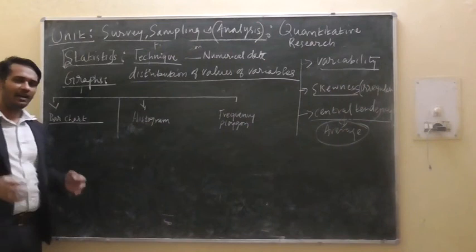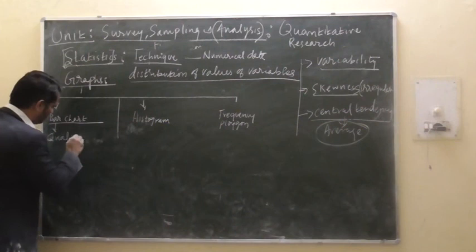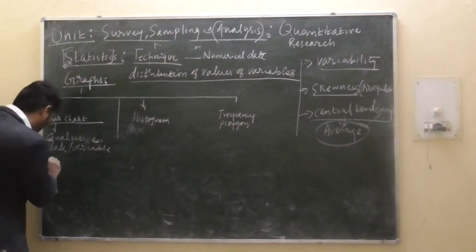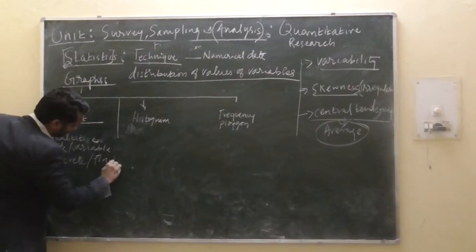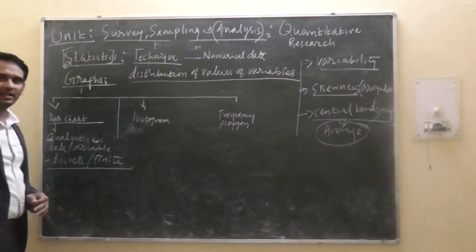The bar chart is specifically used for quantitative data or variables which are not continuous — they are discrete, finite, and unique. For example, how many people are married and unmarried? So we are going to a place where we are trying to ask the family how many people are married.